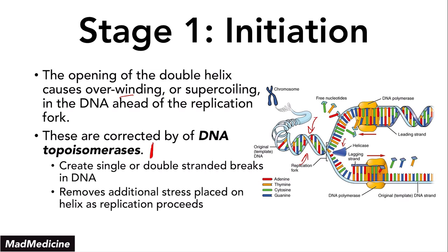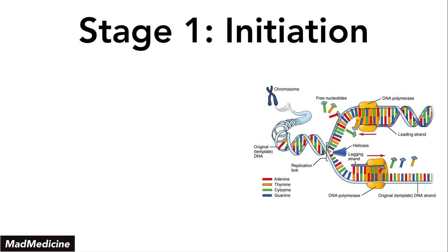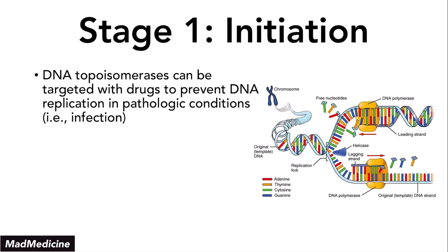DNA topoisomerase is very high yield. It also reduces additional stress placed on the helix as replication proceeds. Importantly, DNA topoisomerase can be targeted by drugs to prevent DNA replication in pathologic conditions like infections or cancer. If you attack these topoisomerase molecules, the supercoiling cannot be undone, the DNA gets damaged downstream, and replication cannot occur properly.